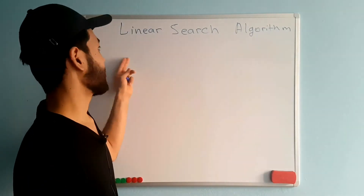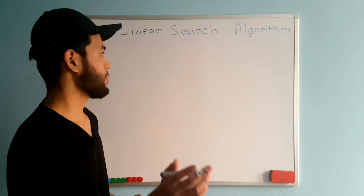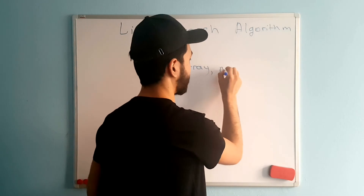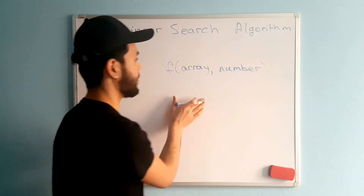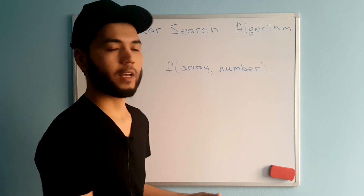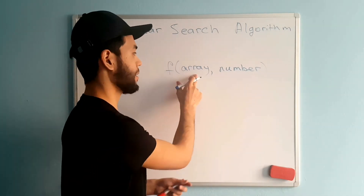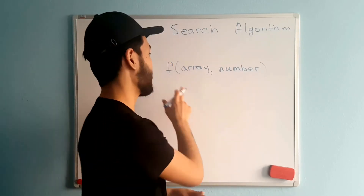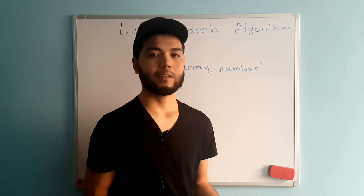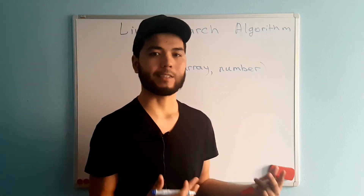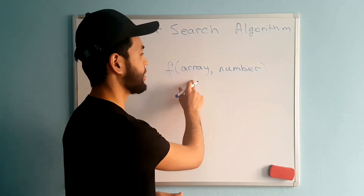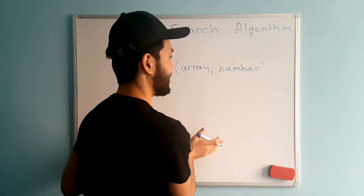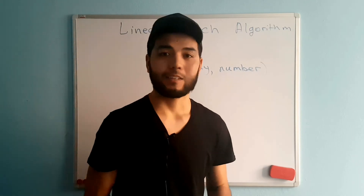Let's see what the linear search algorithm looks like. Imagine I have a function that takes an array and a number. The job of my function is to return true whenever this number exists inside the array, and return false if the number does not exist. To implement this we use a for loop, iterating every time, and whenever an item in the array equals the number we return true, else we return false.